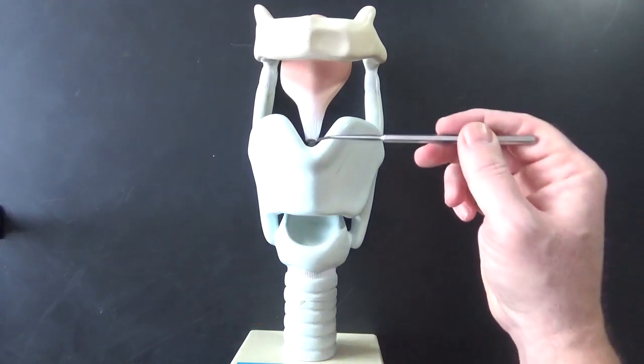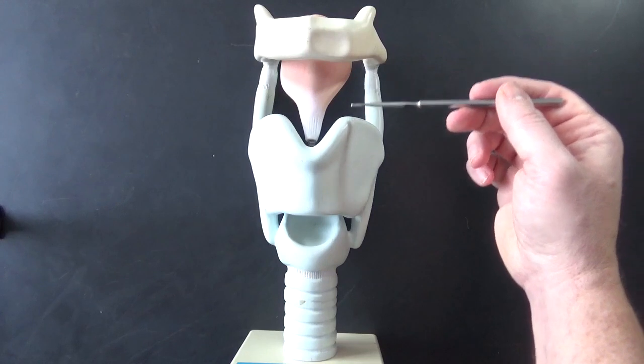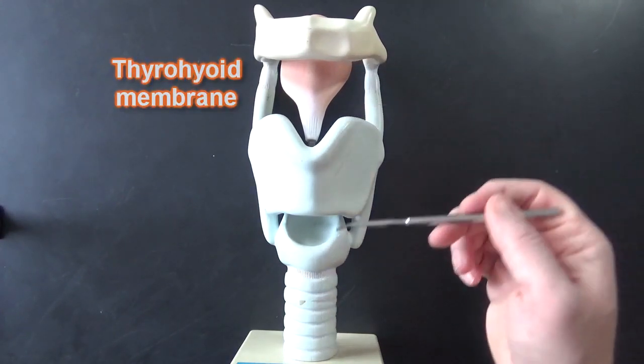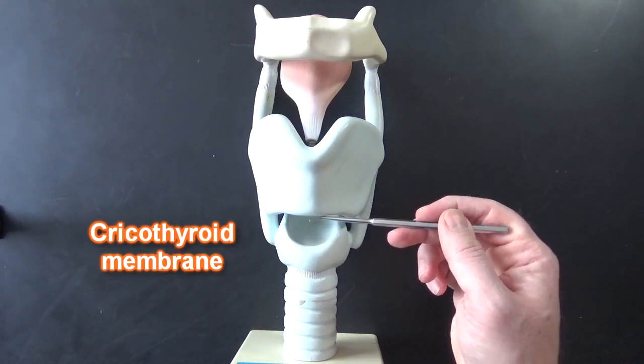Now there would be some membranes here connecting these two structures. The thyrohyoid membrane would be located here. The cricothyroid membrane would be right here.